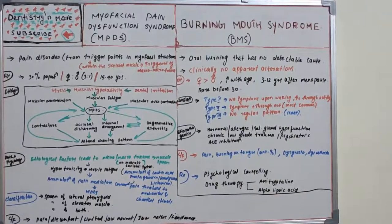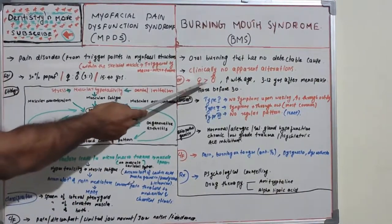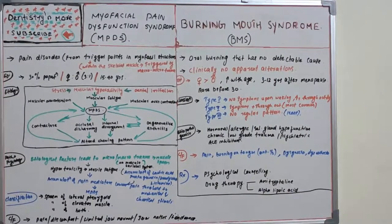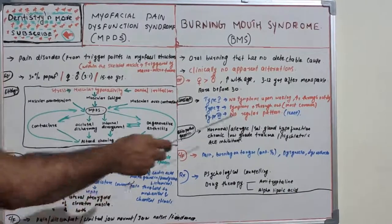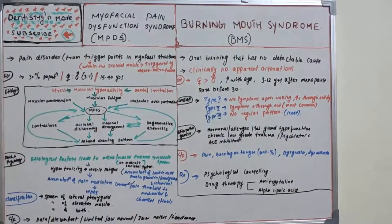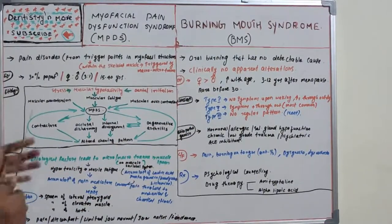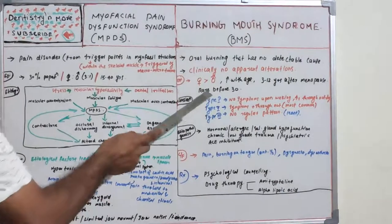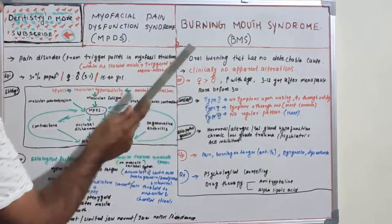Epidemiologically, BMS is most commonly seen among women, with a 6:1 female predilection compared to males. It increases with age and is commonly seen 3 to 12 years after menopause. It is very rare before 30 years of age.